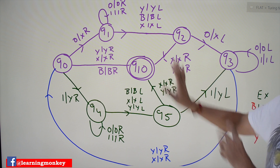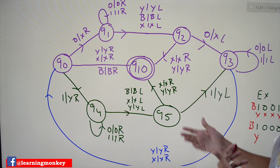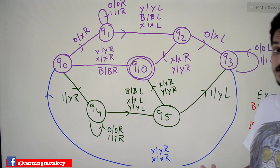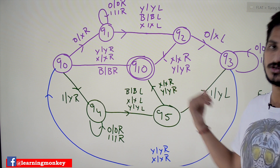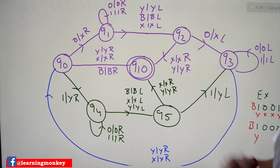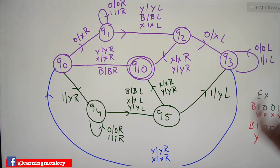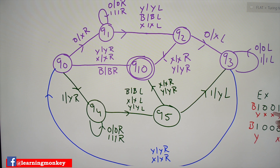Let's try to understand how strings are accepted and rejected with two examples. We will take one accepted example and one rejected example. Example one: '001' — this is an accepted string because it is a palindrome. Let's understand step by step how it gets accepted.